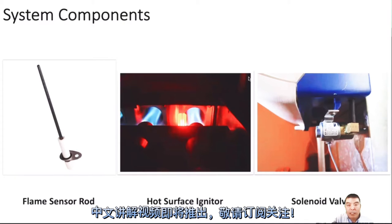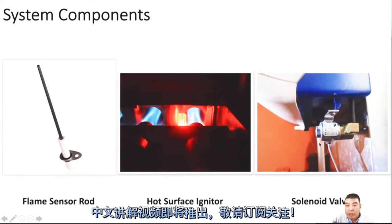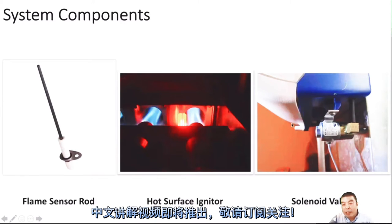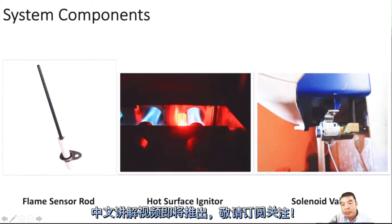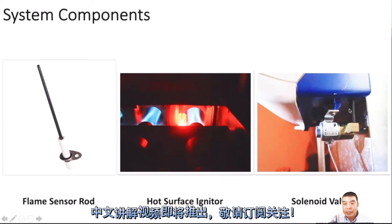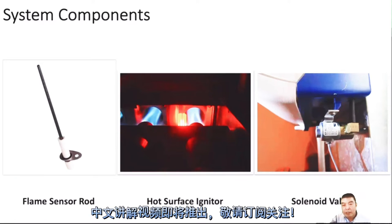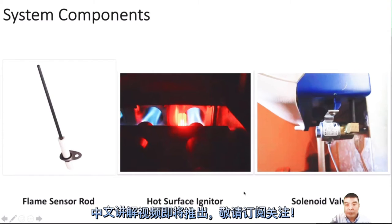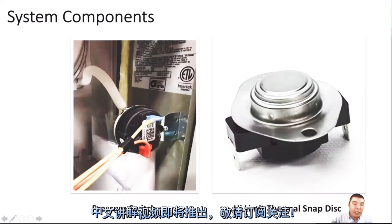The solenoid valve we talked about already in the humidifier section. When the humidity stat calls for the humidifier to run, this solenoid valve gets 24 volts power and keeps the valve open so water will go through the pad or the pipe inside. That's the working principle. Sometimes they don't have a humidity stat and just use the furnace side to control it, but that's not good. We recommend using a humidity stat for better control.